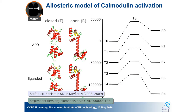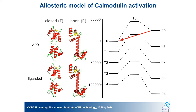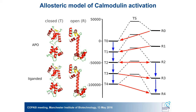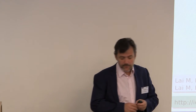Now we have everything to build a model. The model has calmodulin in two states — T-state and R-state, closed and open — and it can bind calcium progressively. Initially the T-state is strongly favored. As calcium binds one by one, the equilibrium progressively shifts from T-state to R-state. Most structures of calmodulin have the four EF-hands in the same state, but that's not always the case — for instance, bound to myosin light-chain kinase with four calcium bound, all EF-hands are in the R-state. Bound to neurogranin, all EF-hands are in the T-state.